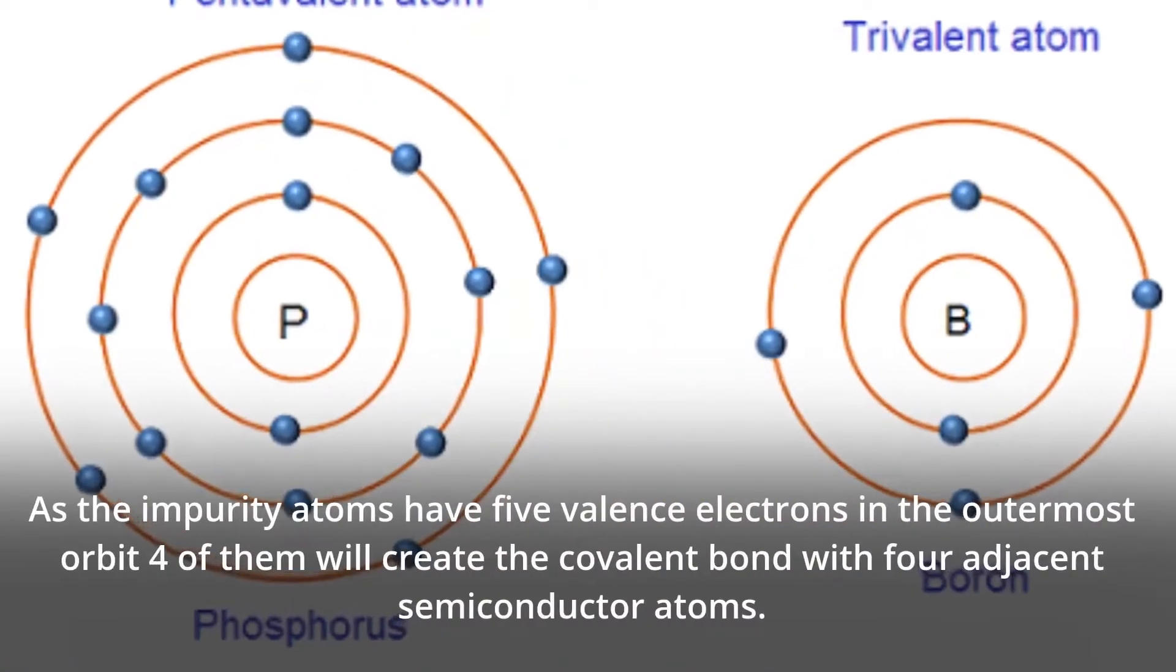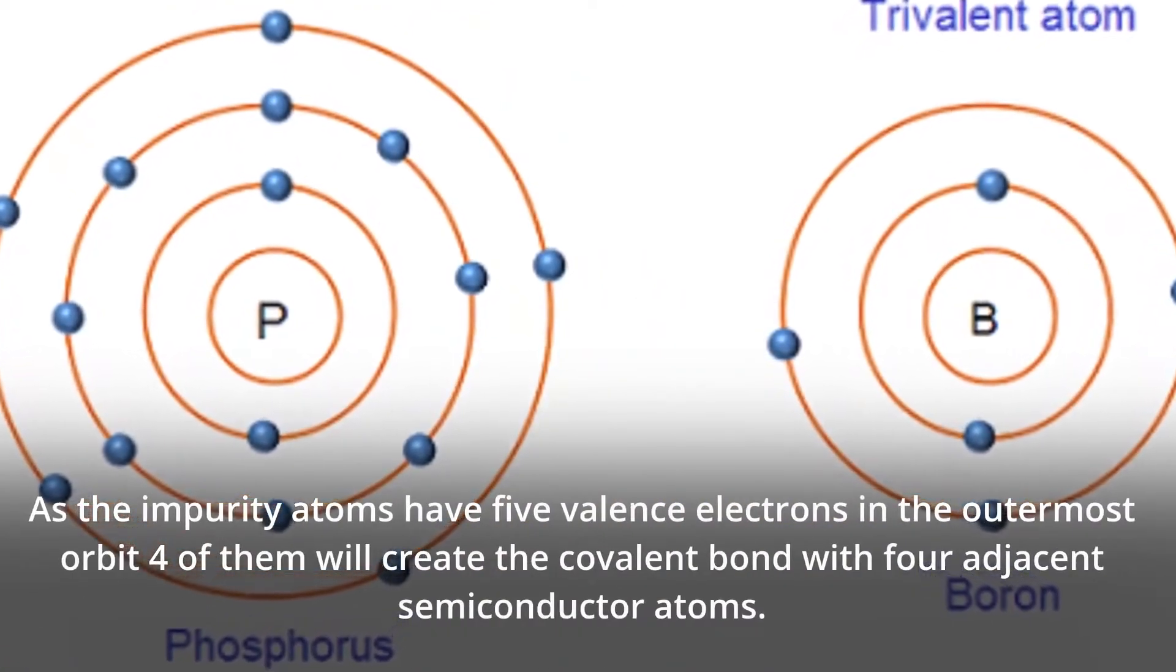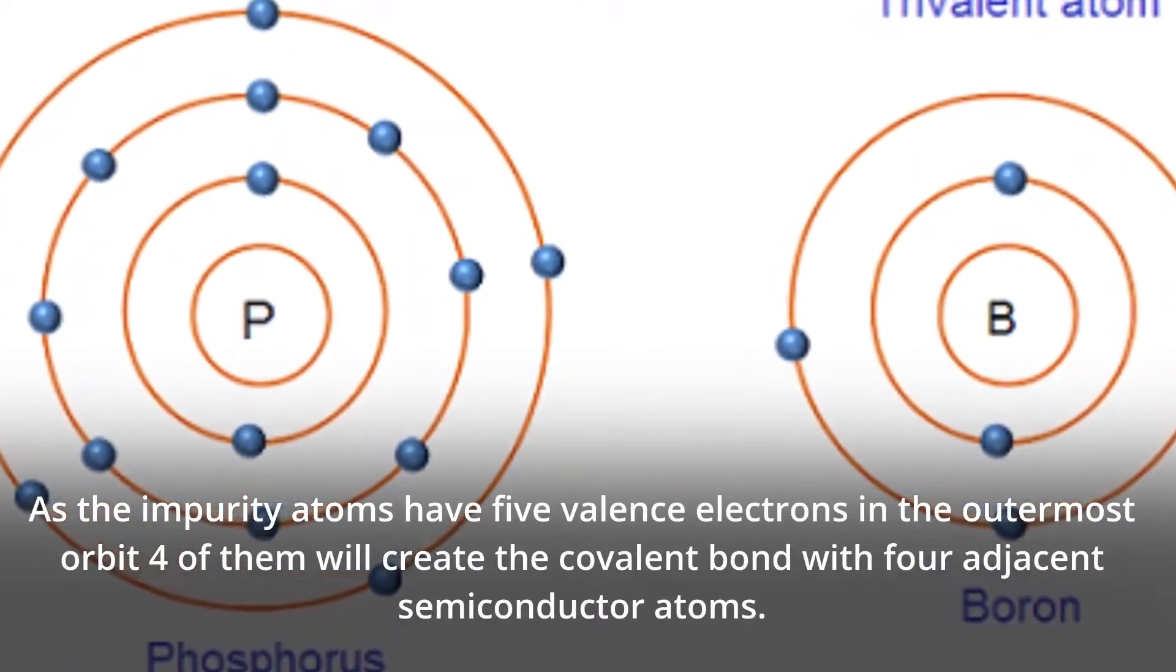As the impurity atoms have five valence electrons in the outermost orbit, four of them will create the covalent bond with four adjacent semiconductor atoms.